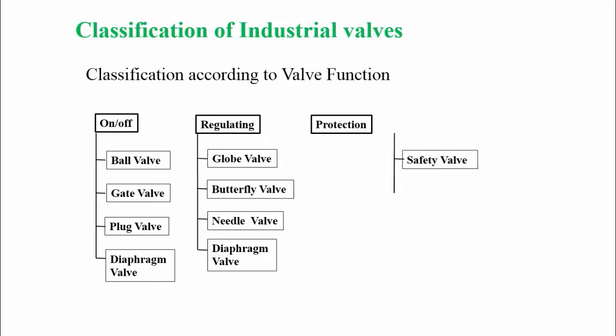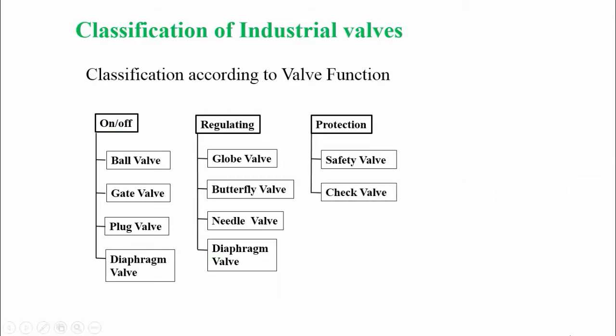And lastly, protection valves. A protection valve is used to protect the system. The first one is a safety valve — a valve that acts as protection of equipment from exploding or damaging, mainly installed in pressure vessels such as chemical plants, electric power boilers, and gas storage tanks. A safety valve is a type of valve that automatically actuates. Another one is the check valve, which has the same protective function for our system.